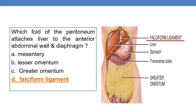Next question: which fold of the peritoneum attaches the liver to the anterior abdominal wall and diaphragm? We previously discussed that the liver is the only digestive organ attached to the anterior abdominal wall. Here you can see the liver and the falciform ligament. The falciform ligament is the fold of the peritoneum that attaches the liver to the anterior abdominal wall and diaphragm.